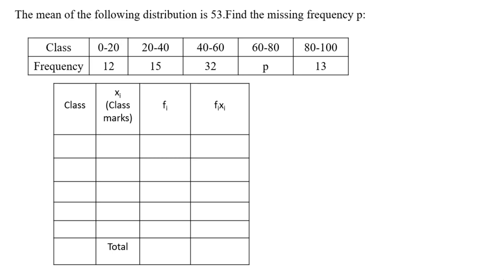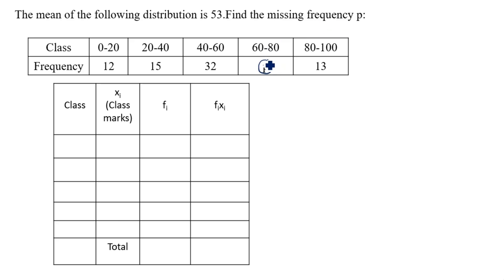Hi friends, welcome to my channel Excellent Ideas in Education. Today we are going to solve this star six problem. The mean of the following distribution is 53. Find the missing frequency p. The missing frequency p — refer the table — this value is missing, so we need to find this one.